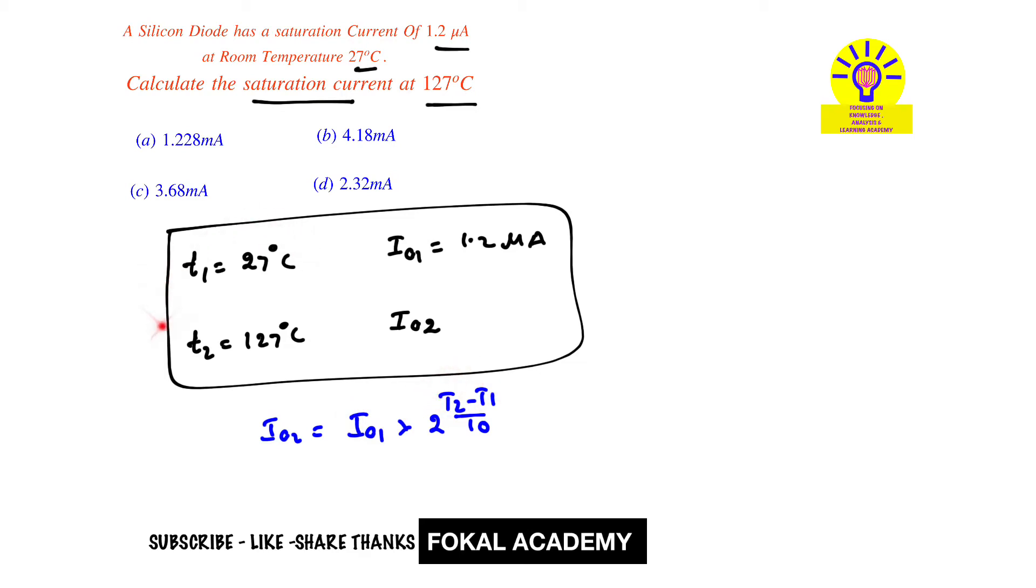The temperature is given in centigrade, so substitute all the data in this equation. Io2 equals Io1, which is 1.2 micro amperes or 1.2 times 10 to the power minus 6, times 2 to the power of (127 minus 27) divided by 10. That equals 1.2 times 10 to the power minus 6 times 2 to the power of 10.